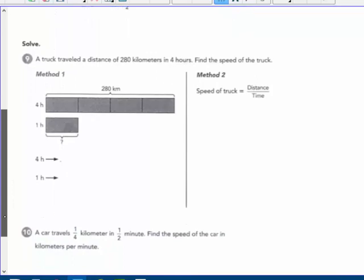Number nine. A truck traveled a distance of 280 kilometers in four hours. Find the speed of the truck. Well, we could bar model it. Four hours is the four bars. It was a total of 280 kilometers. So four hours goes with that 280. If I divide that 280 by four, I'll find out what one hour is. And that is 70, right? Because four goes into 28 seven times. Bring along that zero.